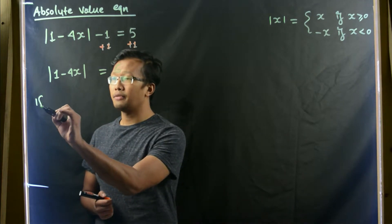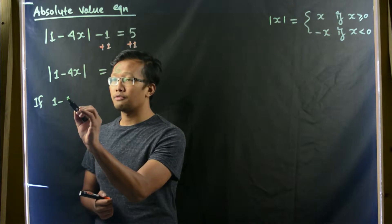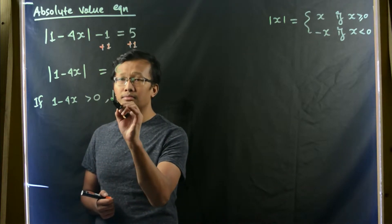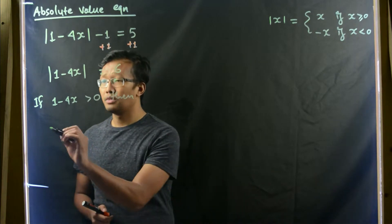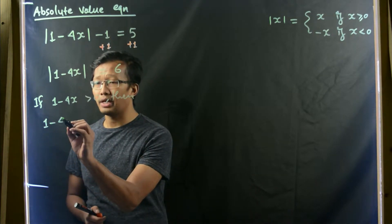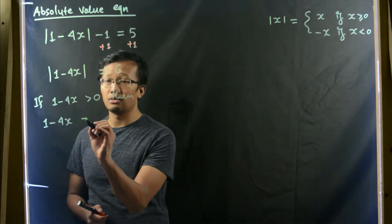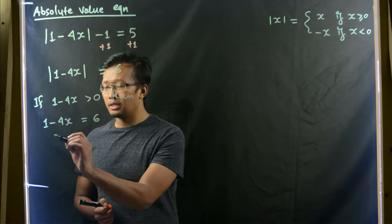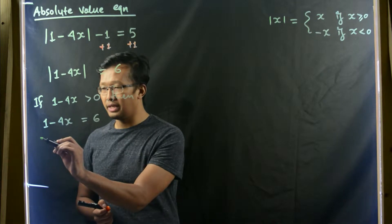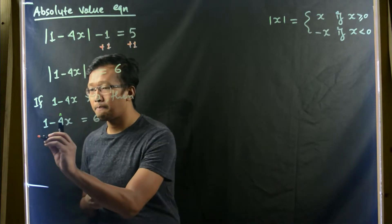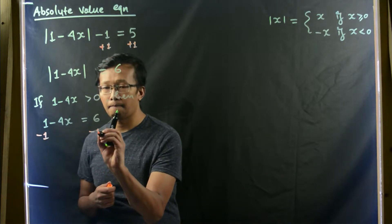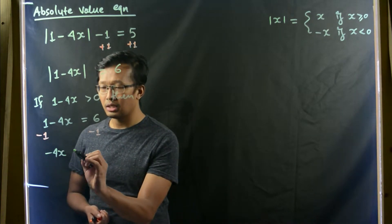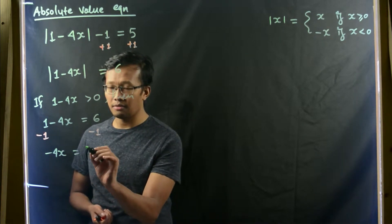We can write, if 1 minus 4x is greater than 0, then we have simply 1 minus 4x equals 6. We take the positive value. Then let us subtract 1 from both sides. We'll be getting negative 4x equals 6 minus 1, which is 5.